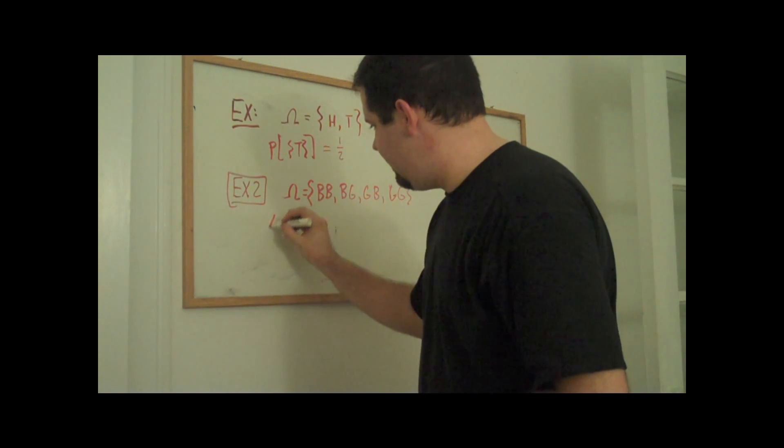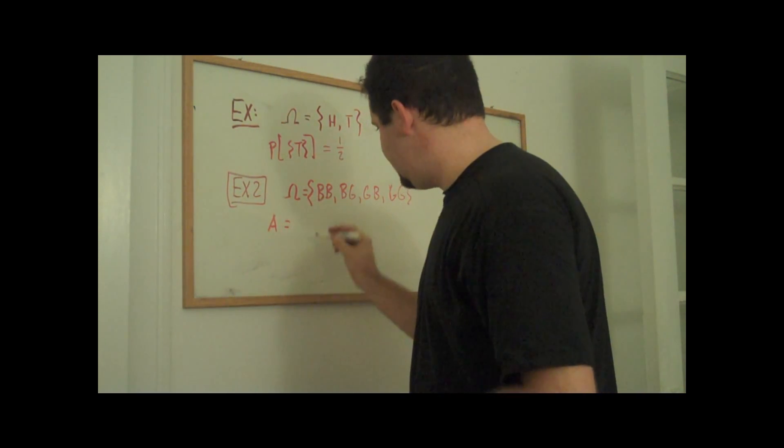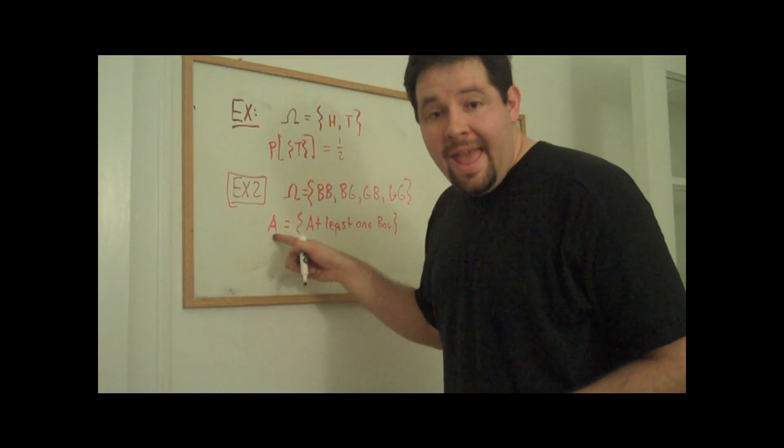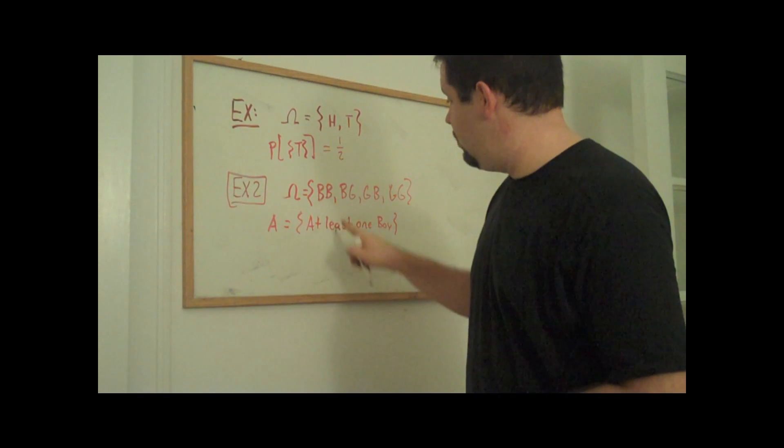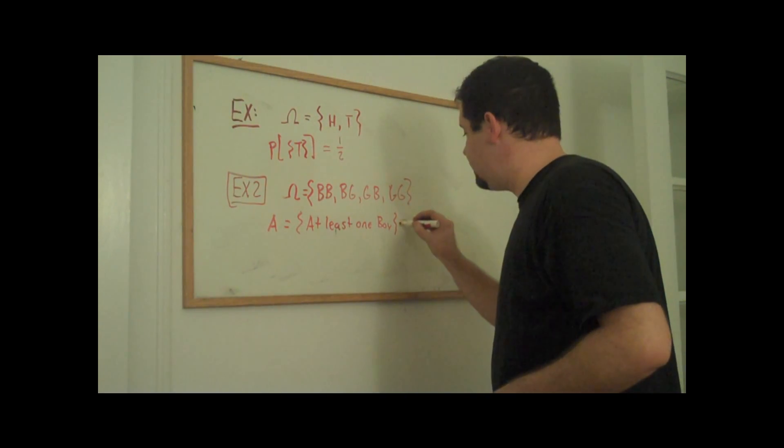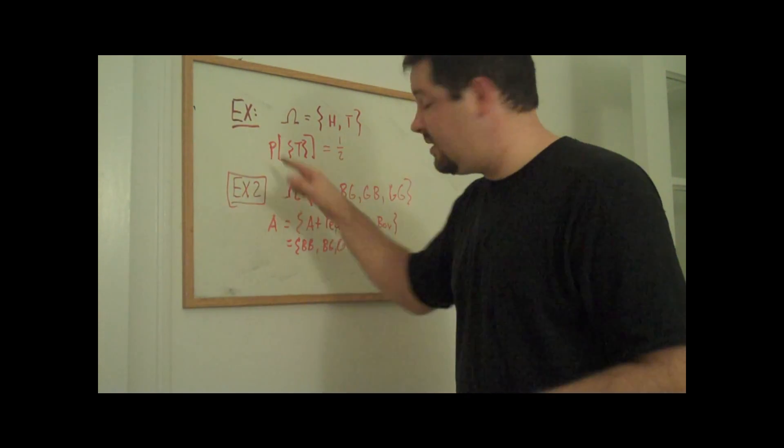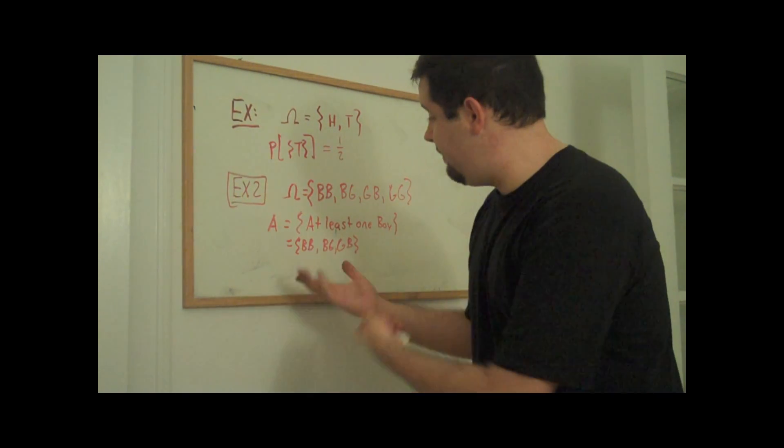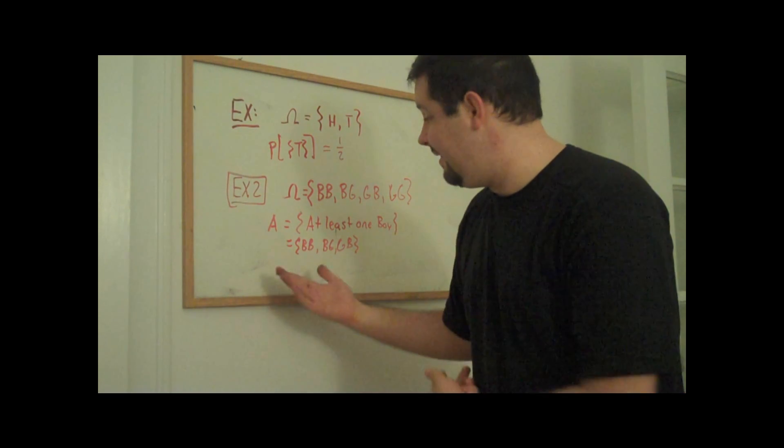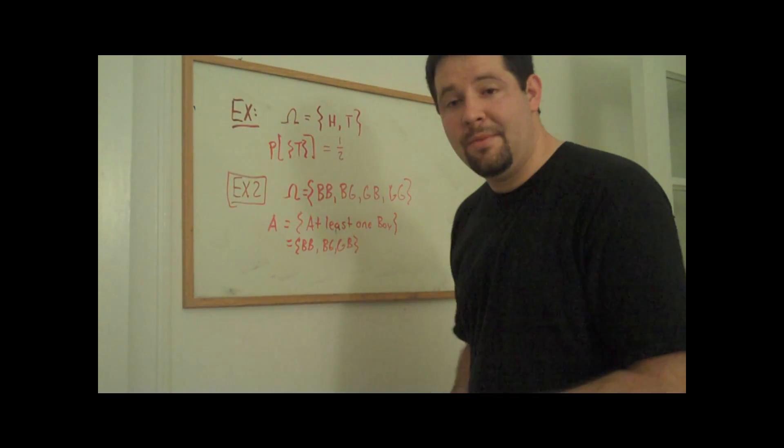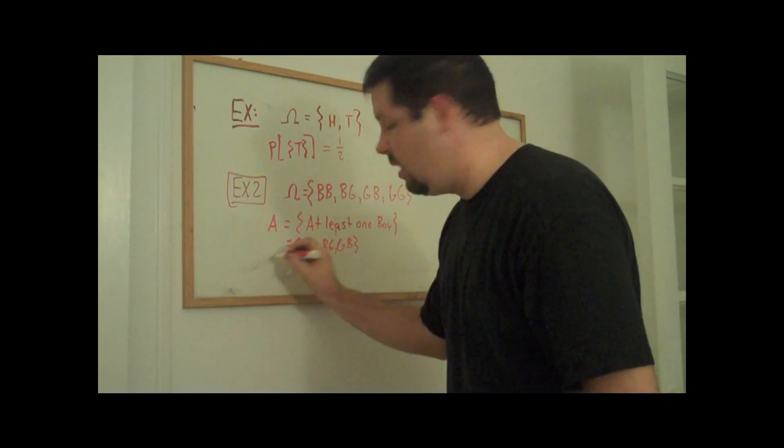So let's think about the event A as at least one boy. Now the event A being at least one boy would include three out of the four elements of the sample space. And with knowledge of probabilities on this original sample space, we can figure out the probability of an event like A. According to our axiom, we can just go ahead and add them and then we can get the probability of three-fourths.